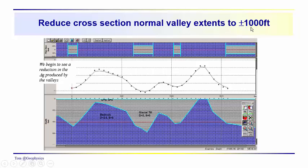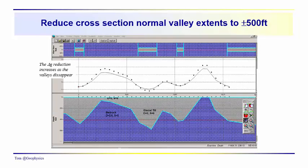So we're starting to reduce the peak to trough magnitude of the anomaly associated with these valleys. So this is for 1,000 foot extent valleys, so let's go in a little bit tighter. Let's take a look at plus or minus 500 feet.